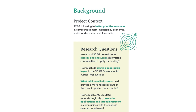How can SCAG use data to identify and encourage disinvested communities to apply for funding? How much do existing geographic layers in the SCAG environmental justice tool overlap? What additional indicators can provide a more holistic picture of the most impacted communities? And finally, how could SCAG use data more strategically to evaluate applications and target investments in communities with the highest need?